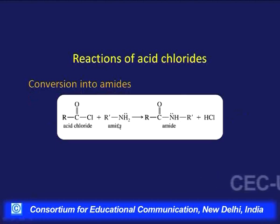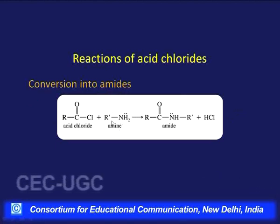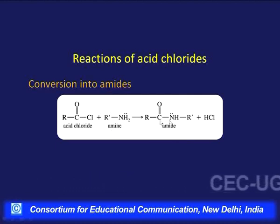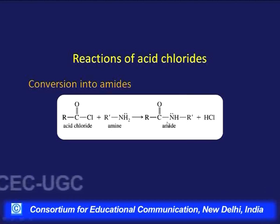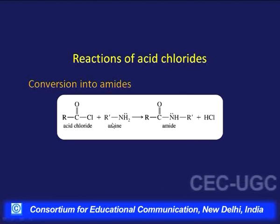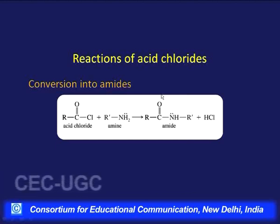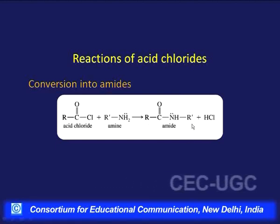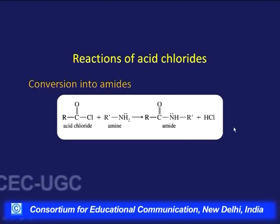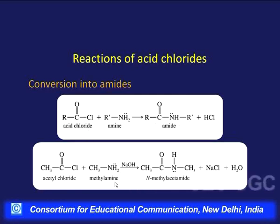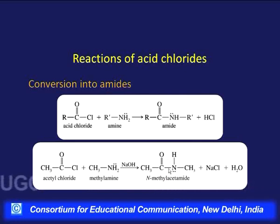When an acid chloride is treated with an amine instead of ammonia, the amine acts as a nucleophile and displaces the halogen, but we get substituted (secondary) amides rather than simple amides. The alkyl group of the amine is now attached to the nitrogen. For example, acetyl chloride reacting with methylamine gives N-methylacetamide (or N-methylethanamide), where one H on nitrogen is replaced by the methyl group.